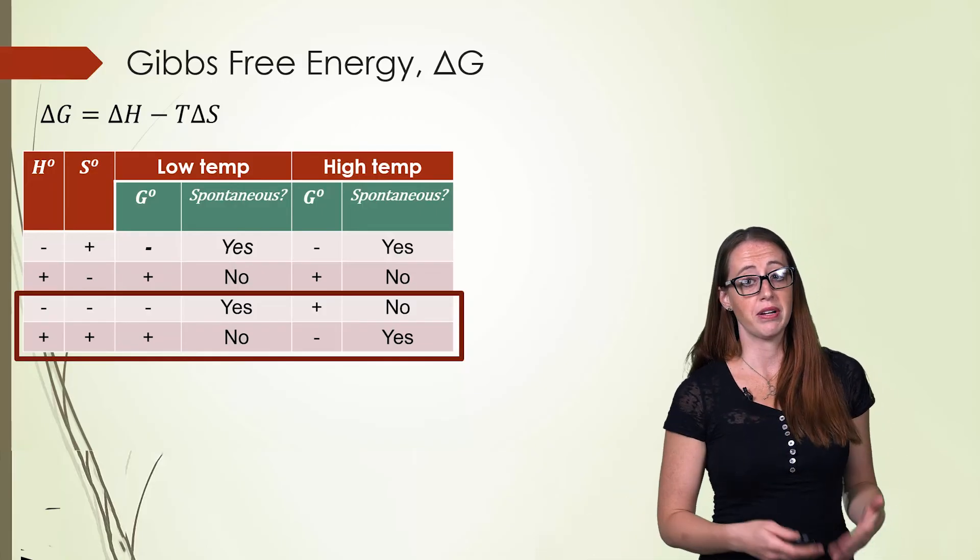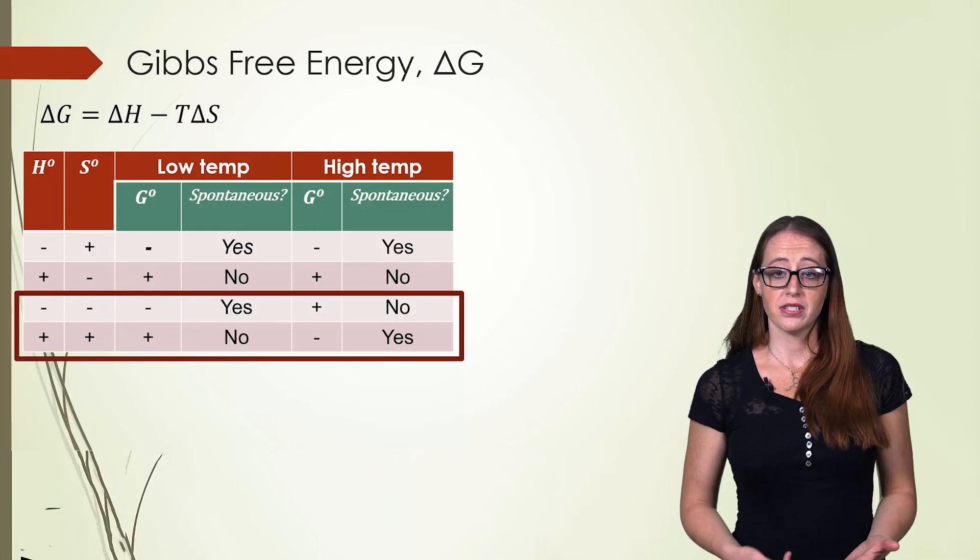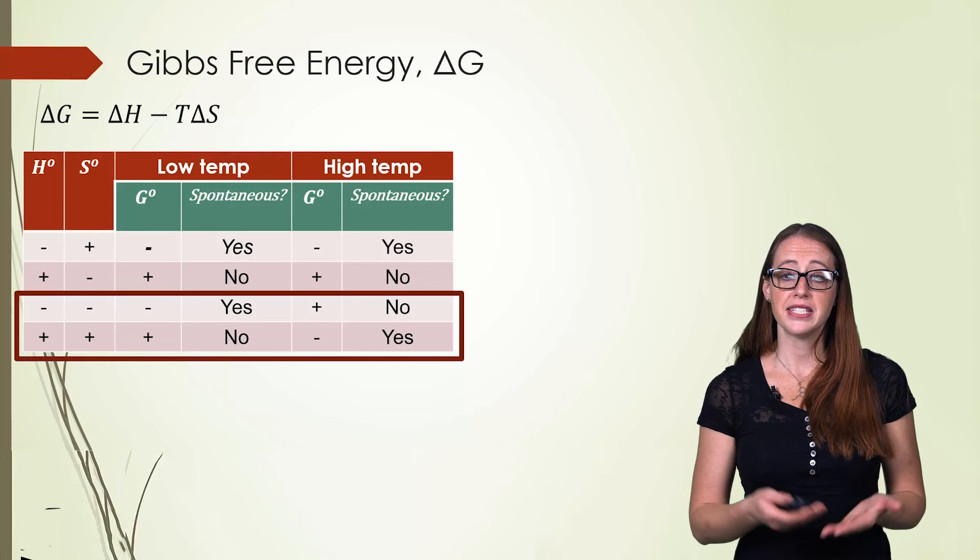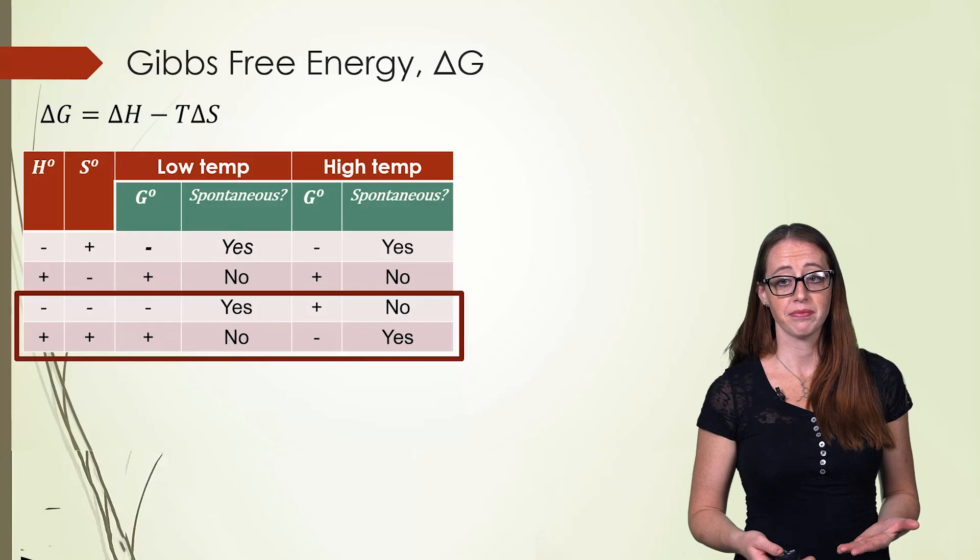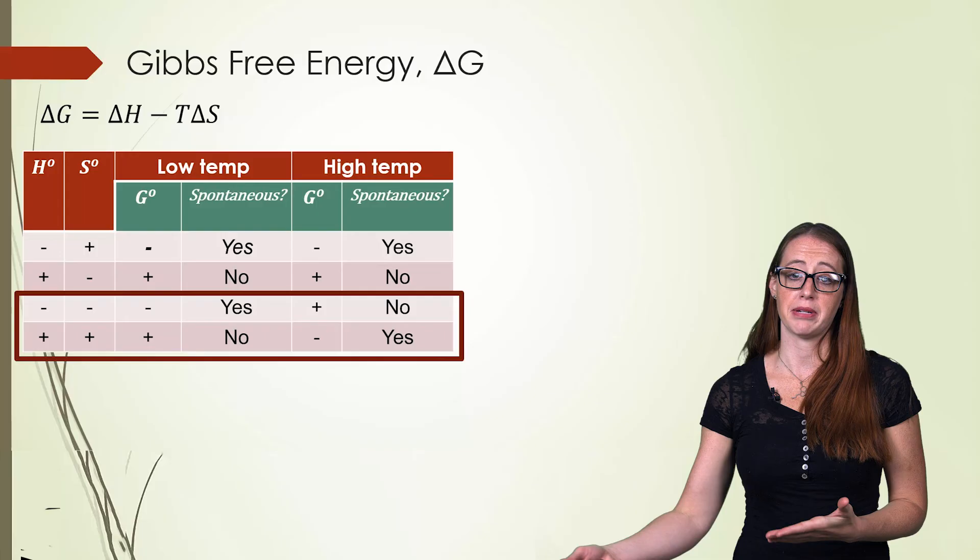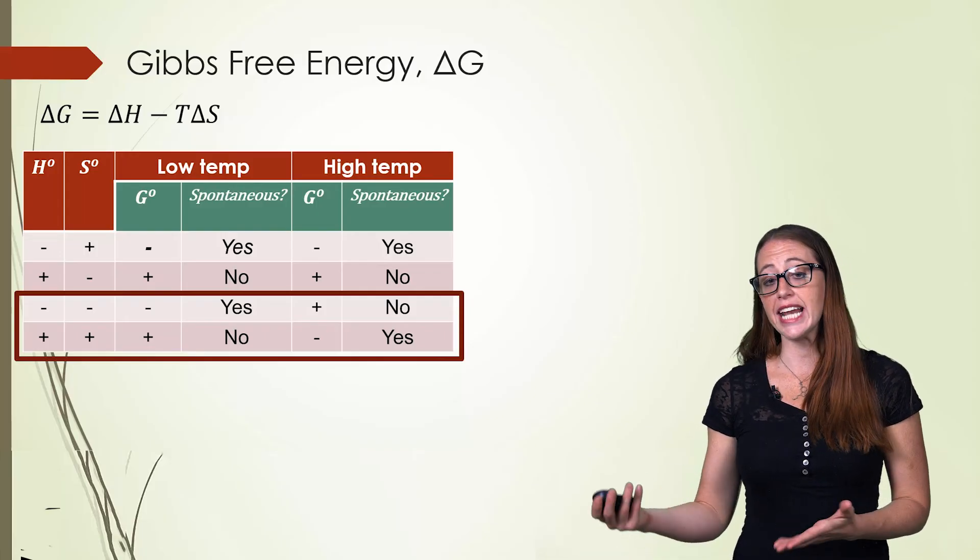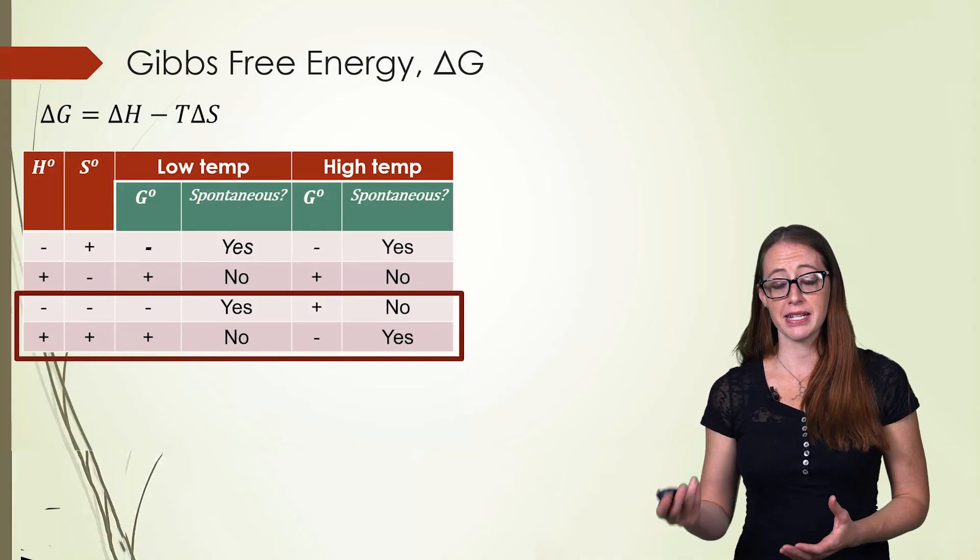Now the opposite is true if both ΔH and ΔS are positive. At low temperatures, because the ΔH dominates, that first term dominates, the ΔG will be positive and the process will be non-spontaneous. As the temperature increases and you reach a high temperature, the second term will start to dominate. Once the entropic term dominates, this makes the ΔG negative because the second term is negative. And therefore the process is spontaneous.